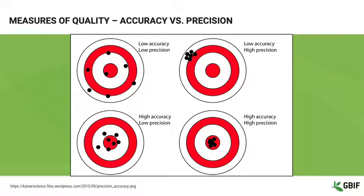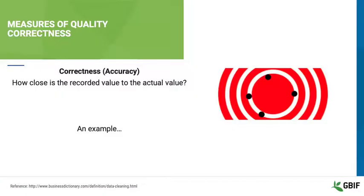This image provides a clear set of illustrations of accuracy and precision. This may be a good image to keep with you when you have to explain these concepts to others. Let's look at some examples of correctness, or accuracy, and how it can help us think about the practicalities of data cleaning. Remember that correctness is how close you are to the center of the target.